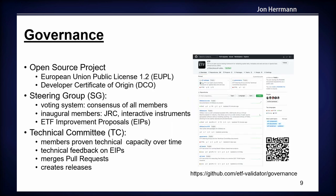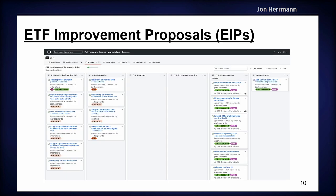It's an open source test framework governed by a steering group, which currently consists of representatives from JRC and Interactive Instruments. The steering group members can propose new changes to the software through ETF improvement proposals. The steering group is complemented by a technical committee, which does the technical work like merging pull requests and doing releases. There is a predefined process for ETF improvement proposals on a publicly available GitHub project board. The EIP starts as a draft, is discussed, then the technical committee analyzes it, proposes changes, and it goes through the release process until implemented.